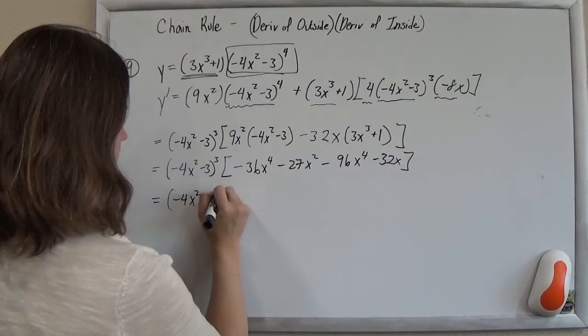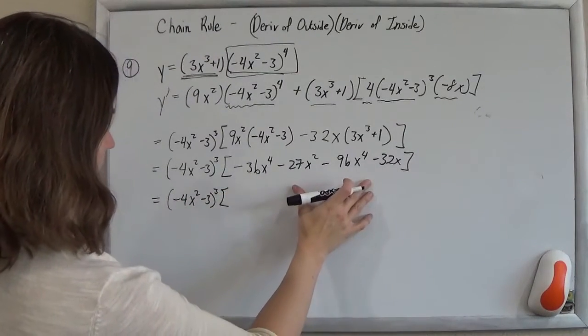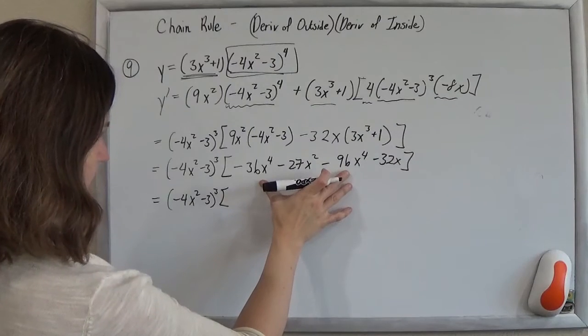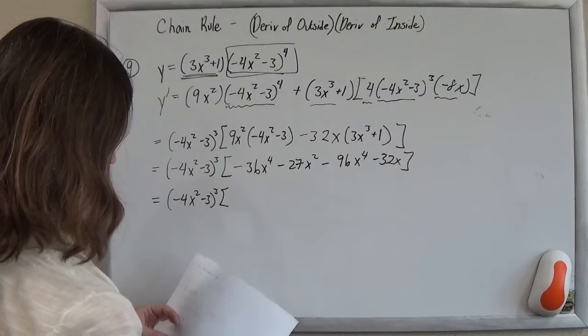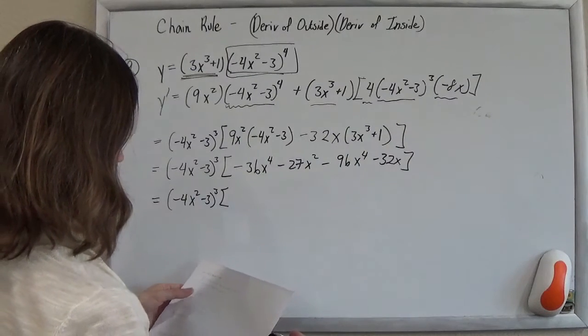Distribute minus 36x to the fourth minus 27x squared minus 96x to the fourth minus 32x. This piece out here is still just chilling. Anything I can combine here. Minus 36x minus 96x to the fourth. Yeah, I can combine that.